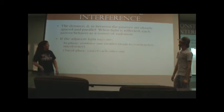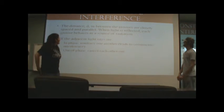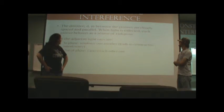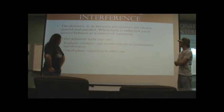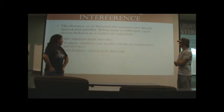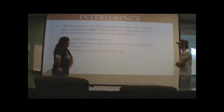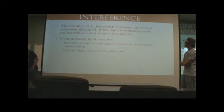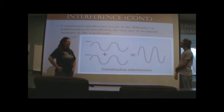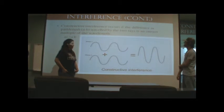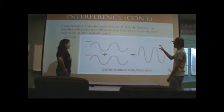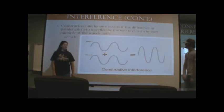And we're going to talk to you about constructive interference. The distance d in between the grooves are closely spaced in parallel. When light is reflected, each groove behaves as a source of radiation. If the adjacent light rays are in phase, they reinforce one another, which leads to constructive interference. If they're out of phase, they cancel each other out. And constructive interference occurs if the difference in path length A to B traveled by the two rays is an integer multiple of the wavelength. So they have two different waves, and then they add up to this one wave.